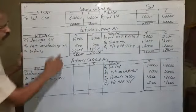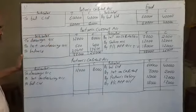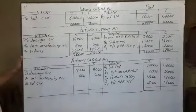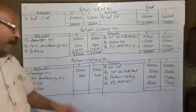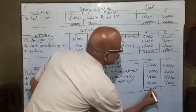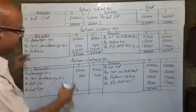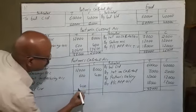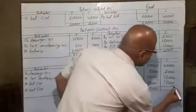On debit side, drawings 12,000 and 8,000, interest on drawings 600 and 400, and balance CD. First we total both sides. The total is 66,000.